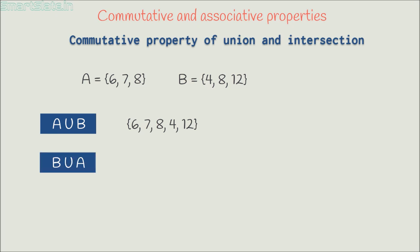Now find the union of B and A. Union of B and A consists of elements from B: 4, 8 and 12. Now include elements from A — since 8 is already there, we take 6 and 7. So union of B and A has the elements 4, 8, 12, 6 and 7. If you observe, both sets have the same elements. Hence we can conclude that union of A and B is the same as union of B and A. We have verified the commutative property here.